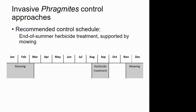We recommend a combined approach of herbicide treatment followed by mowing, and this control schedule should be expected to be repeated for a few years to eliminate invasive Phragmites stands. The treatment timeline calls for late August through September herbicide treatment, and mowing when the ground is frozen before nesting birds are out. Julia is a great resource for questions about control methods and knowledge of individual populations across the landscape.